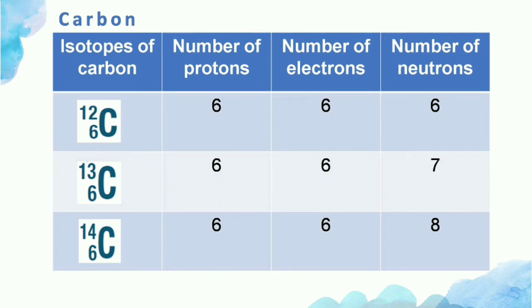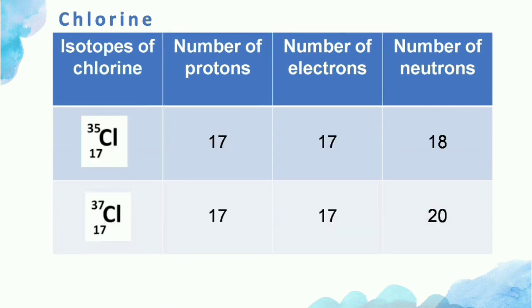Carbon-12, carbon-13, and carbon-14 are the three isotopes of carbon. Since carbon has atomic number 6, each carbon isotope has 6 protons and 6 electrons. Carbon-12 has 6 neutrons, carbon-13 has 7 neutrons, and carbon-14 has 8 neutrons. Chlorine has two isotopes: chlorine-35 and chlorine-37. In both isotopes, the number of protons and electrons is 17 because chlorine has atomic number 17. Chlorine-35 has 18 neutrons and chlorine-37 has 20 neutrons.